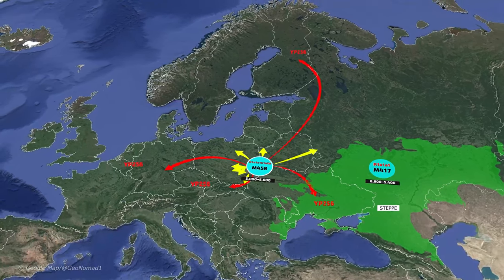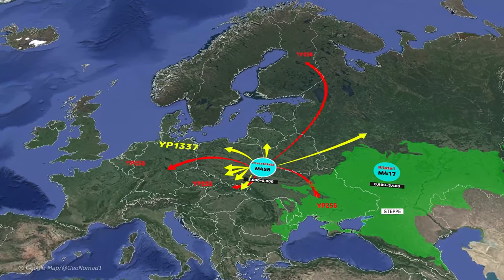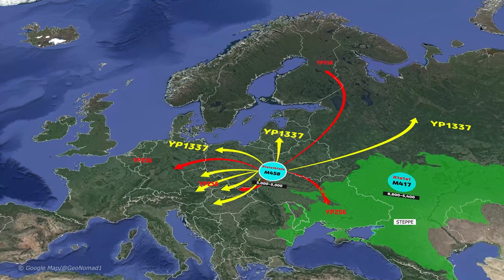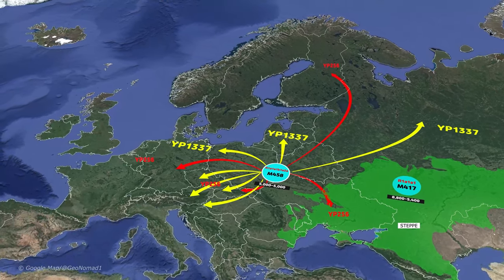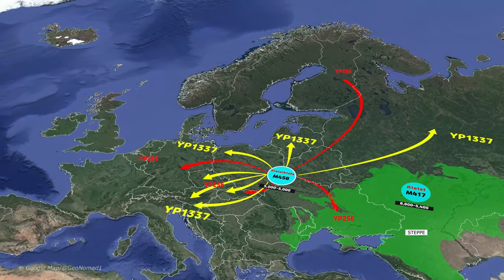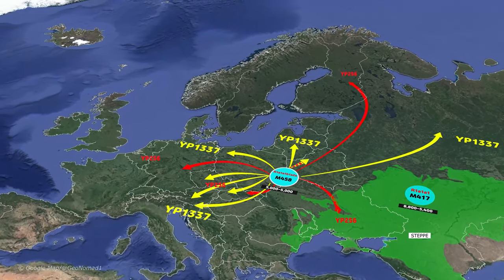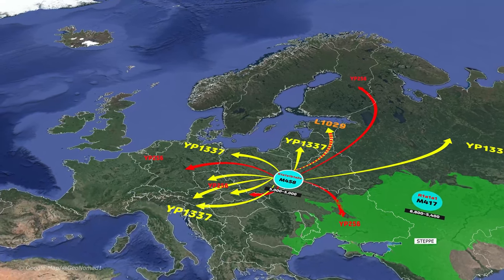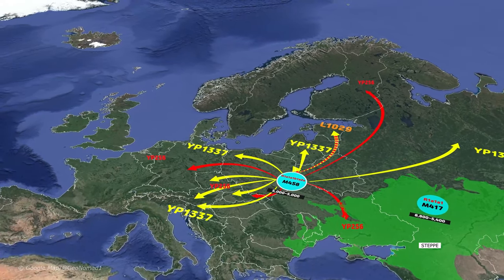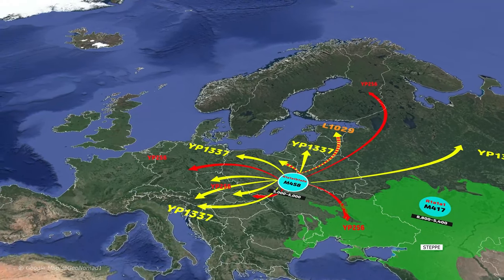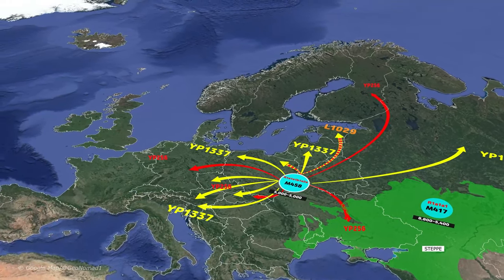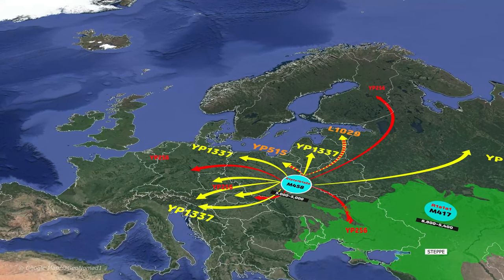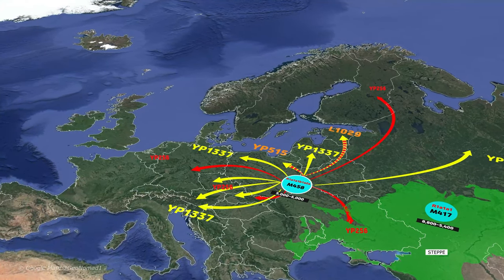Another branch, YP1337, spreads to Russia, Poland, Lithuania, Slovakia, Czechia, Austria, and Slovenia. Some of the branches belonging to this paternal lineage spread to Northeastern Europe — that's the L1029. YP515 can be found a lot in Poland.